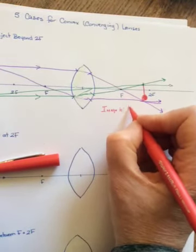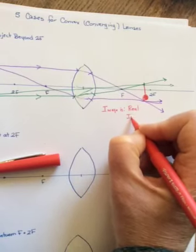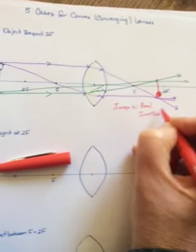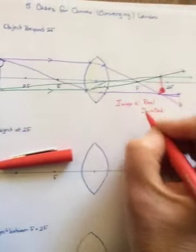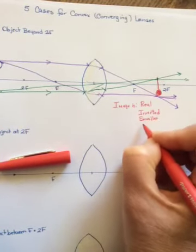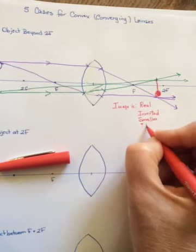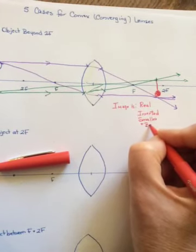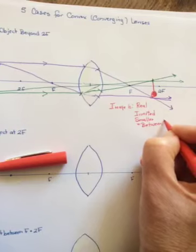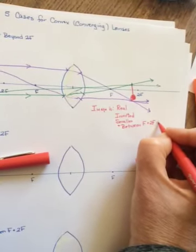The image is upside down, so it must be real and inverted. If you look, it's smaller, and it's between f and 2f on the opposite side.